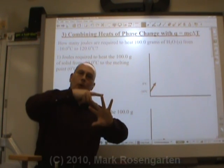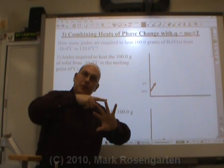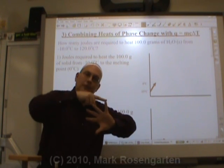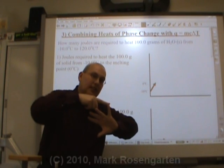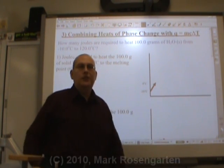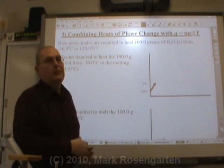Three, heat it from zero degrees to 100 degrees. That requires MC delta T. Fourth, boil it. That requires heat of vaporization. Finally, fifth, heat it up from 100 degrees Celsius to 120 degrees Celsius. That uses MC delta T. There are five steps to solving this problem.